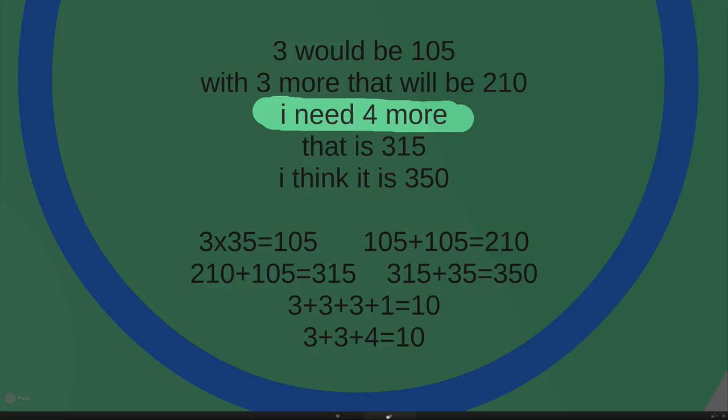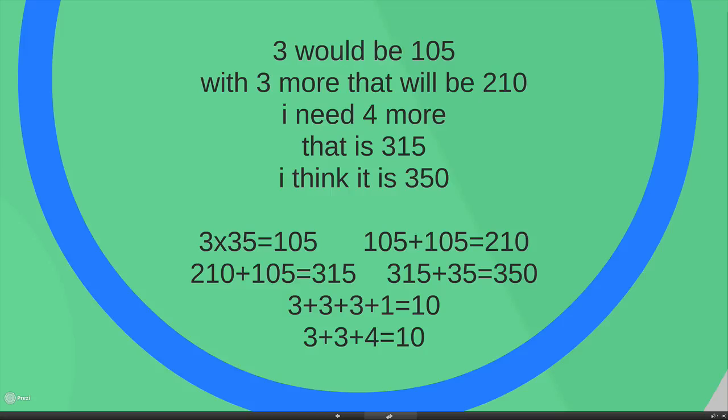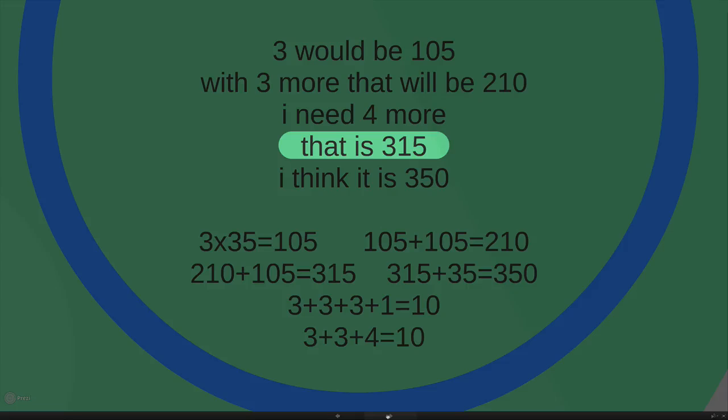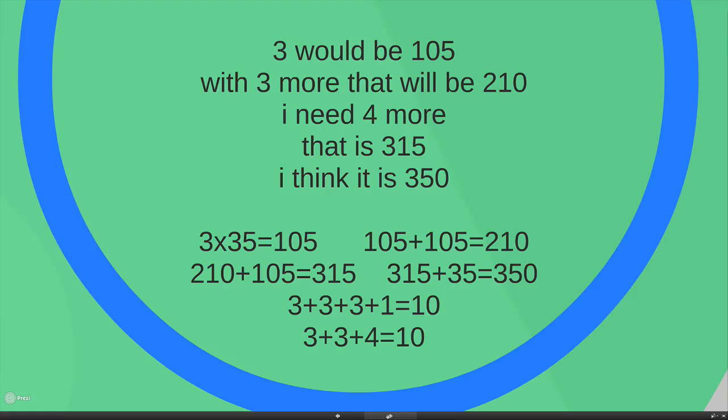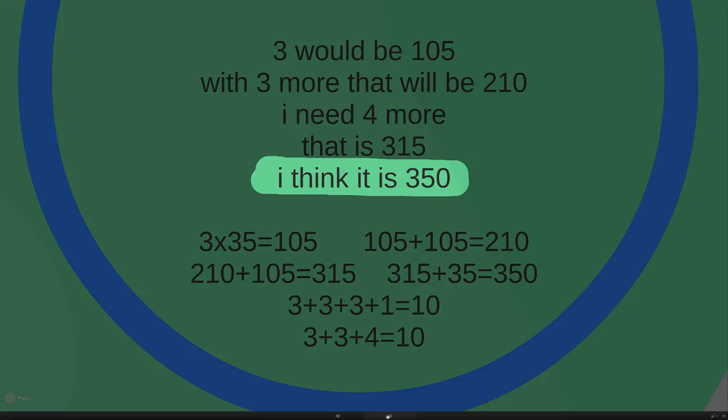And then he goes, I need 4 more. Very interesting. He knows 3 plus 3 is 6 and to get to 10, he needs 4 more. And then he goes, that is 315. What he's done there is he's actually added another 3 onto 210. So 210 plus 105 is 315. And then he goes, I need one more. And he goes, I think it is 350. And he's got it right.